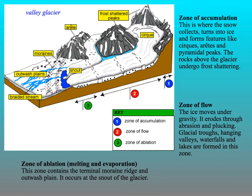There are three zones in a glacier. There's a zone of accumulation, which is where the névé builds up, and we get features like cirques or corries, arêtes, and pyramidal peaks — the process of frost-shattering occurs here, and we're going to look at that later on. There's the zone of flow, which is where the glacier actually moves. And there's a zone of ablation, which is where the glacier melts and evaporation occurs, and we're going to look at that further in this unit.